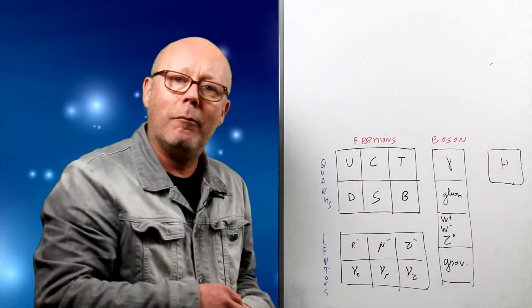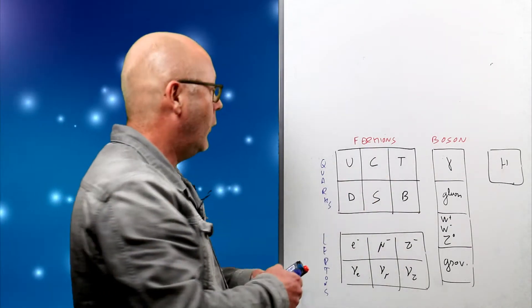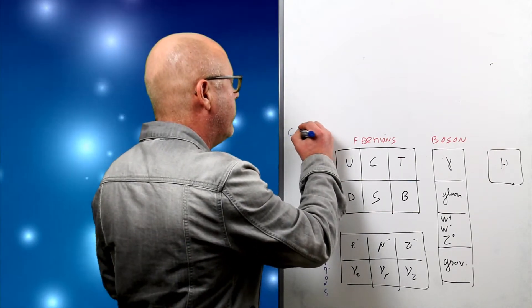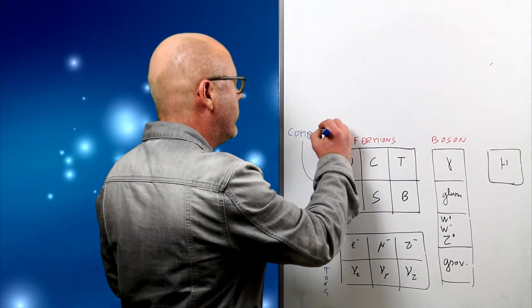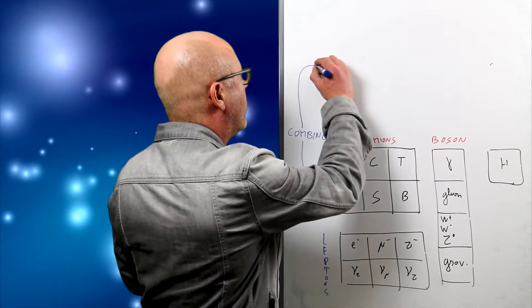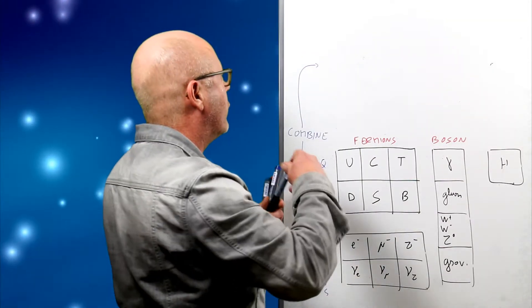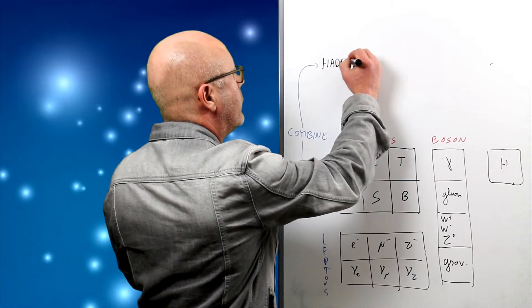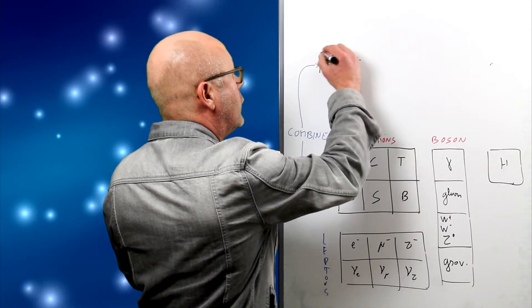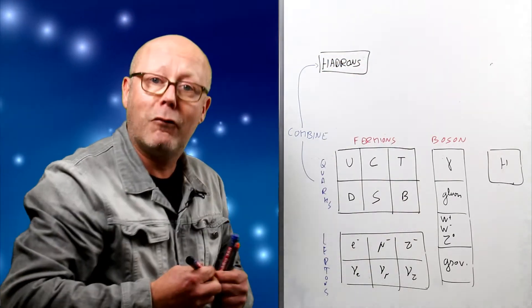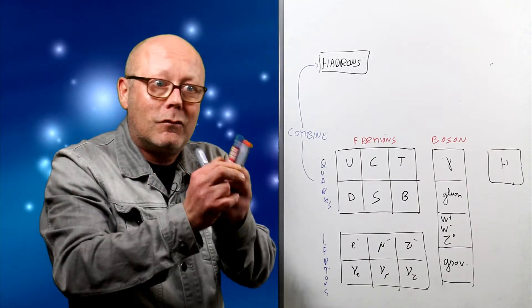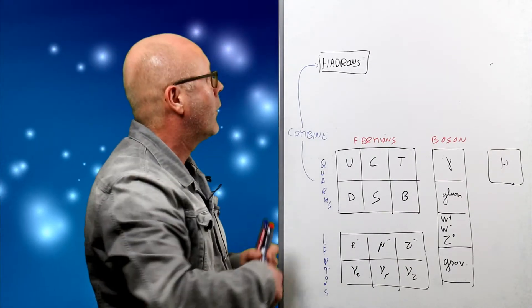But when you combine them, you can create stuff. For instance, if I combine quarks together, I get hadrons. I can combine two, three, or even four quarks together and get composite particles, which I call hadrons.